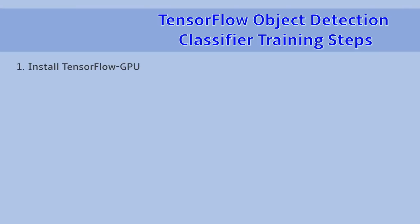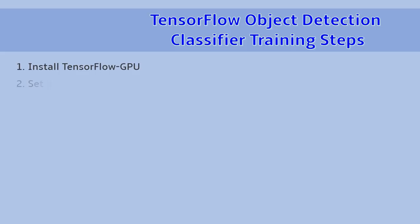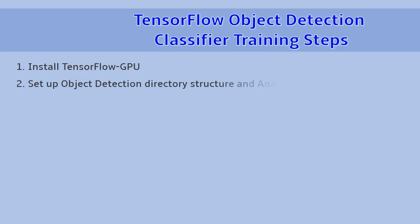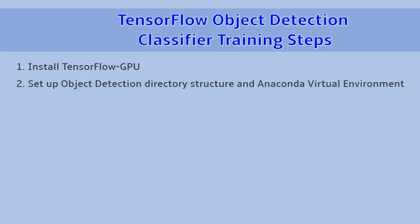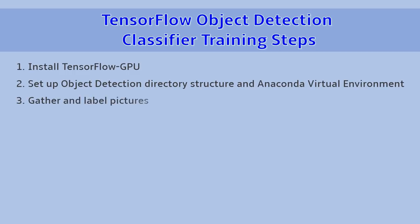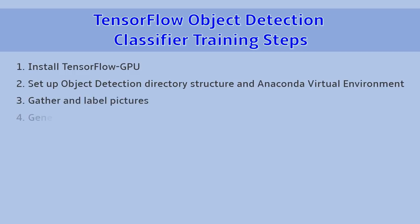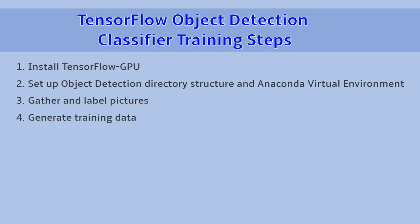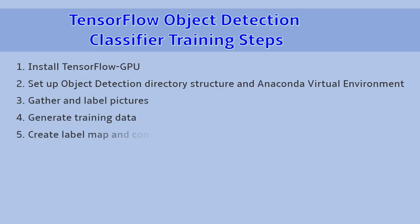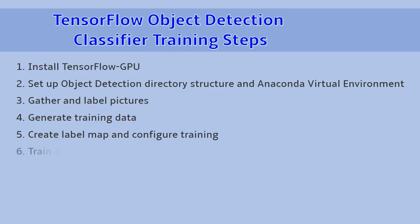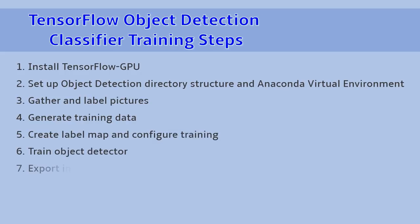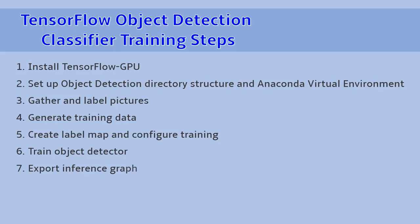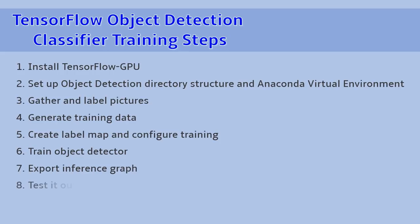Step one: install TensorFlow GPU. Step two: set up the object detection directory structure in an Anaconda virtual environment. Step three: gather and label pictures. Step four: generate training data. Step five: create a label map and configure training. Step six: train the object detector. Step seven: export the inference graph. And step eight: test and use your newly trained object detector.